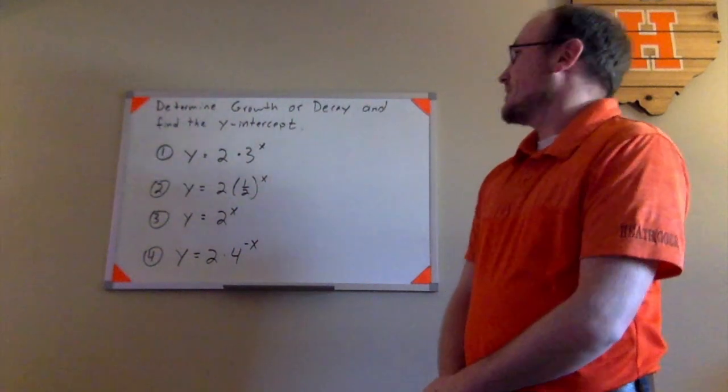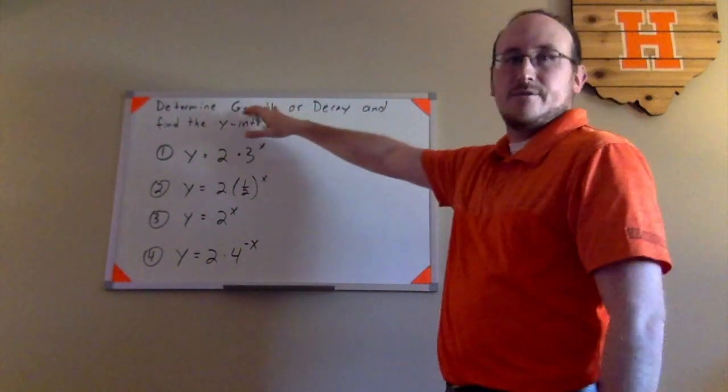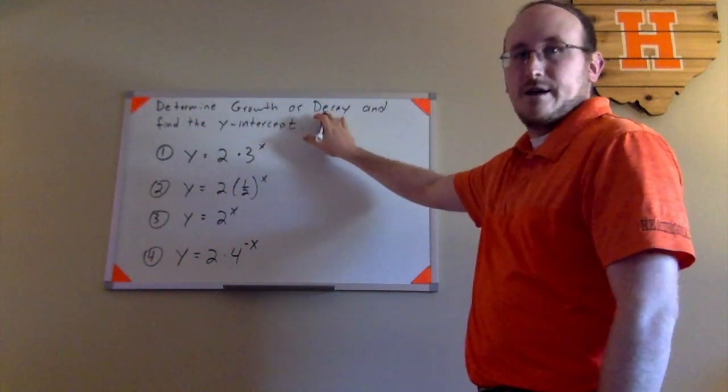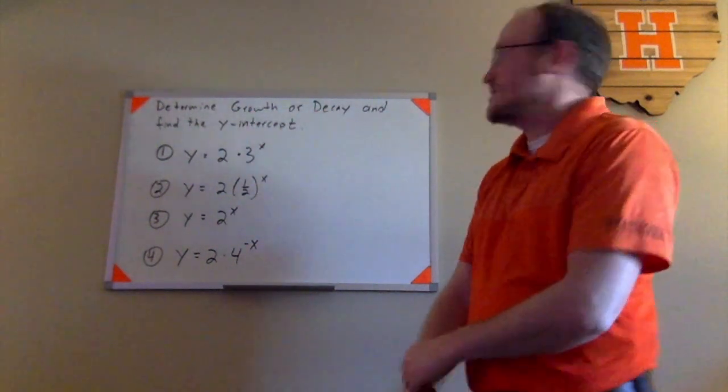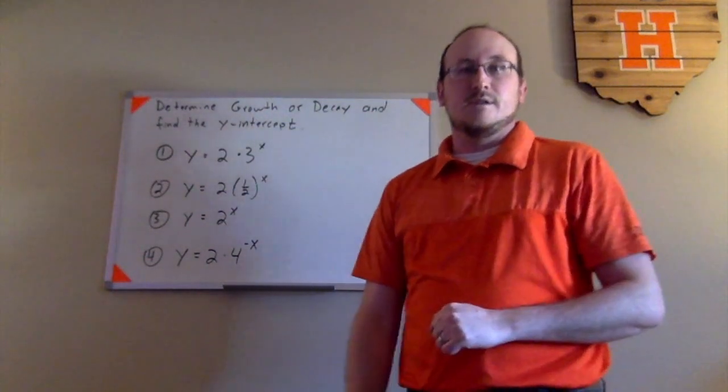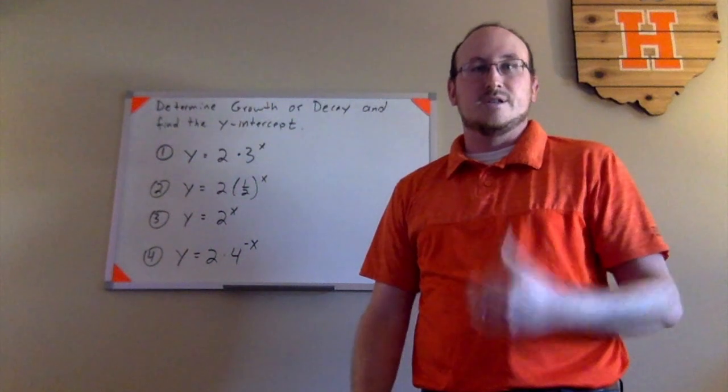Okay, so let's take a look at a couple of examples here to see if you can determine whether each of these functions represents exponential growth or exponential decay. I will tell you that they are all exponential functions. And then we need to be able to identify the y-intercept. Remember from the previous talk that the y-intercept is the initial value.